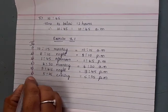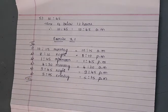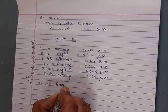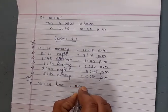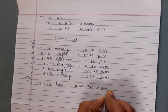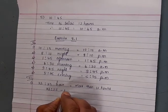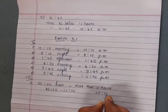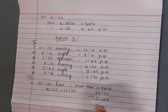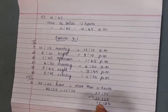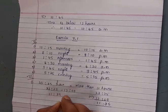Next, convert the following timings to 12 hour clock time, writing AM or PM. First: 23:25 hours. The time is more than 12 hours, so 12 should be subtracted. 23:25 minus 12: subtracting — 5 minus 0 is 5, 2 minus 0 is 2, 3 minus 2 is 1, 2 minus 1 is 1 — we get 11:25 PM.